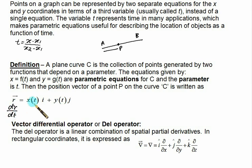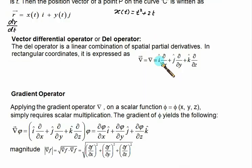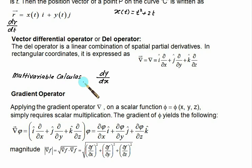We can take the derivative of the position vector. The exact function may not be known, but if it is given in terms of t, such as t² + 2t, we can find the derivative. We then introduce the del operator, and using the del operator we can find the gradient — this falls under multivariable calculus. Instead of dy/dx, we now use the del operator in three dimensions.